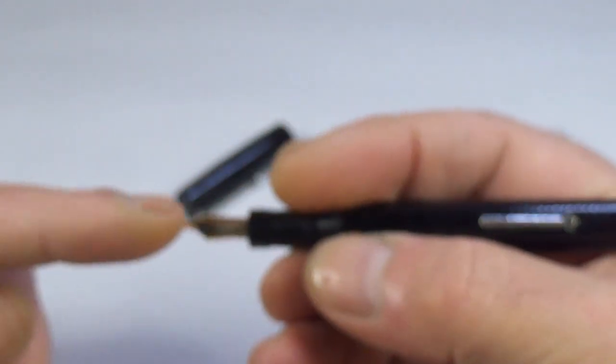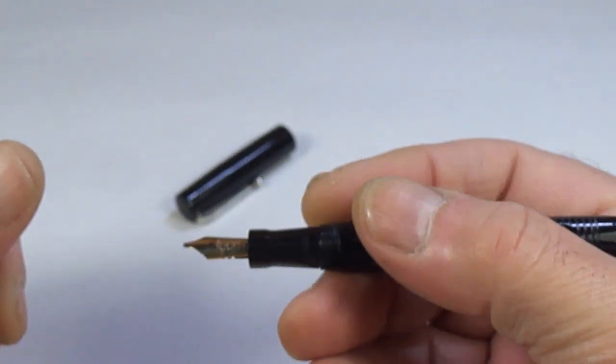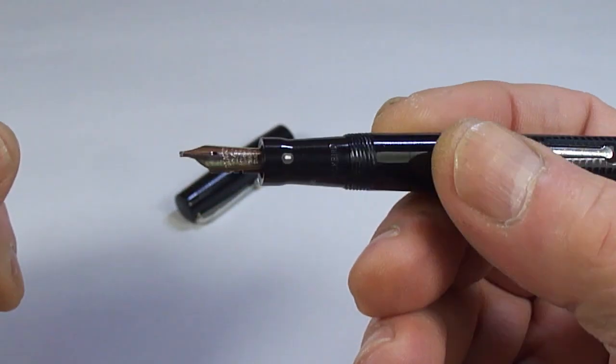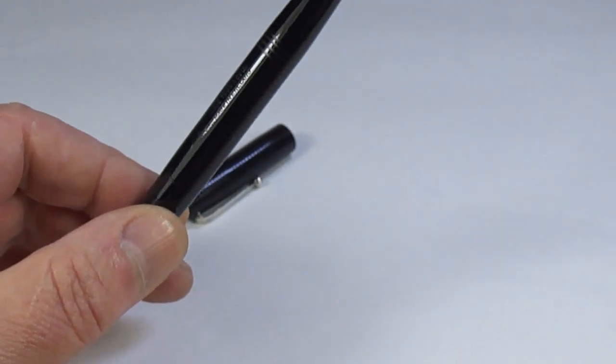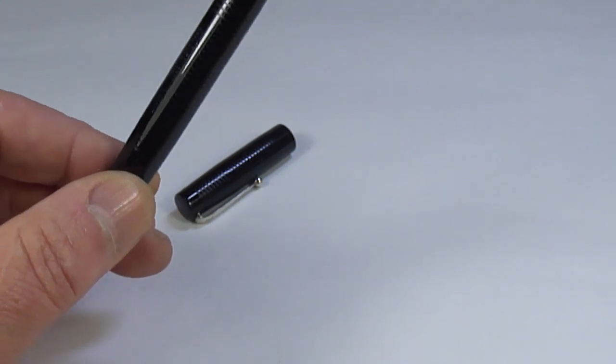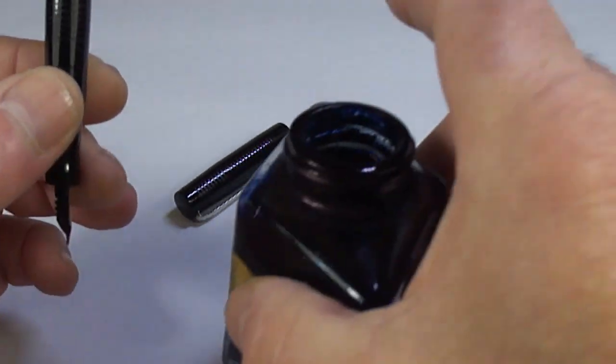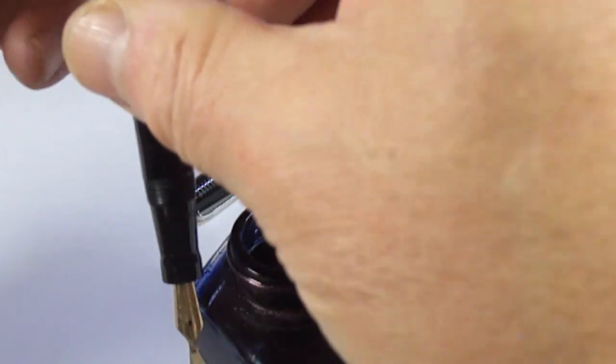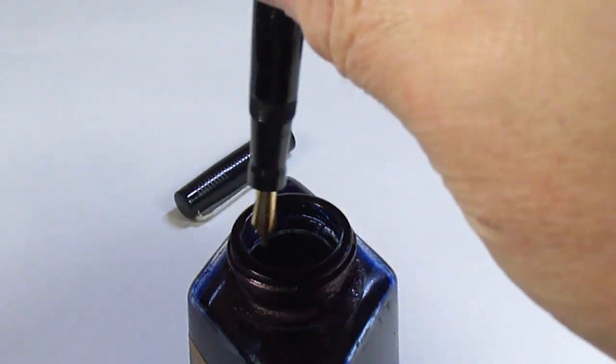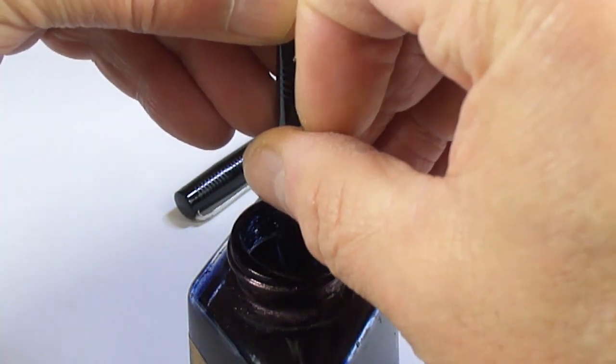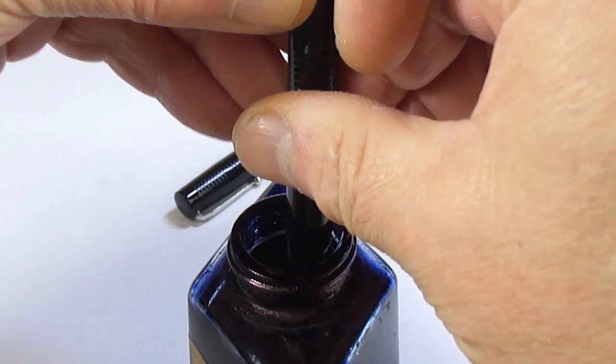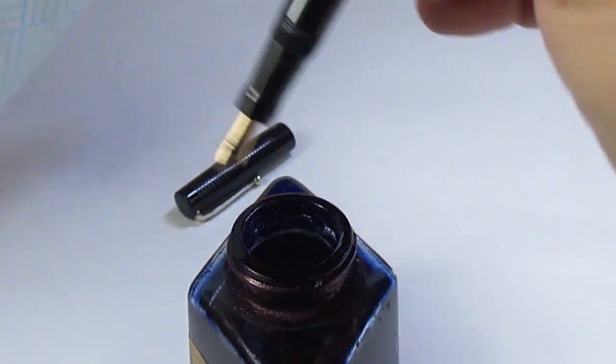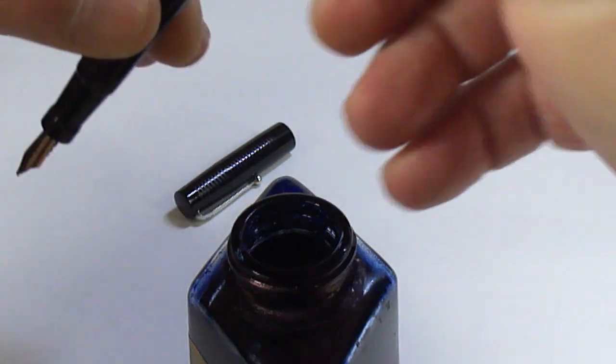So it's got a lovely stub nib. And how does it write? Right, so what we'll do, I'll actually just give it a little bit of a fill. So let's dip the nib in the section in the ink. There you go, lots of bubbling going on. It's only for a writing sample, so let's do it nice and quickly.